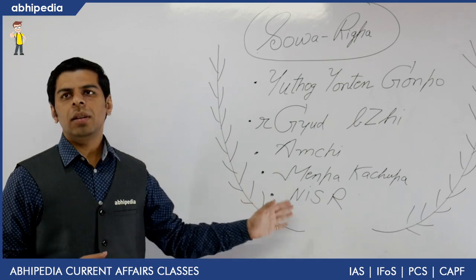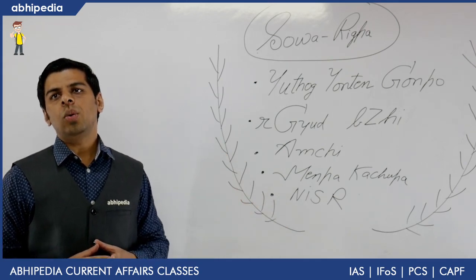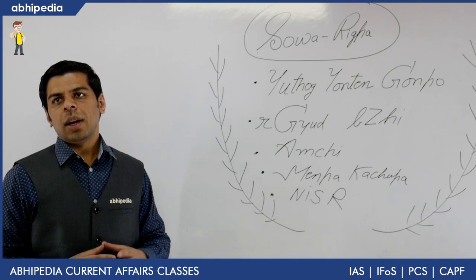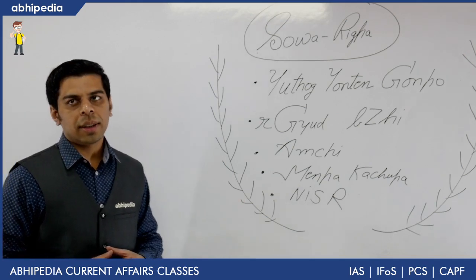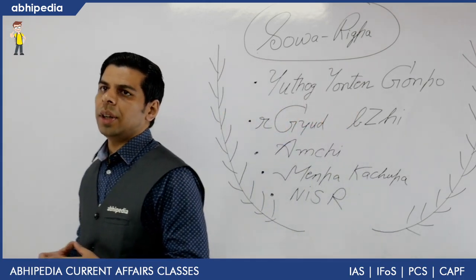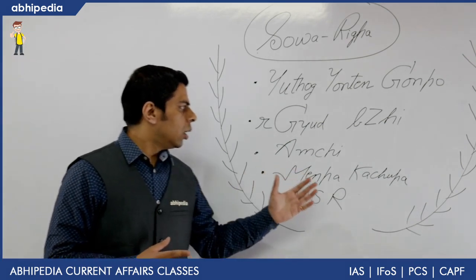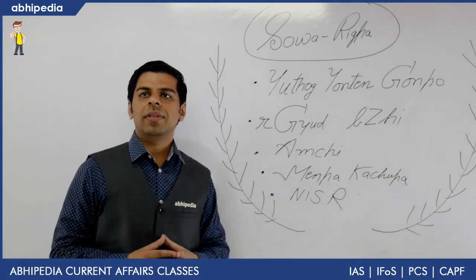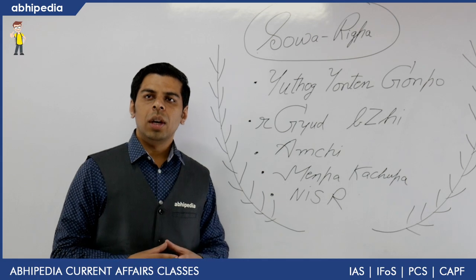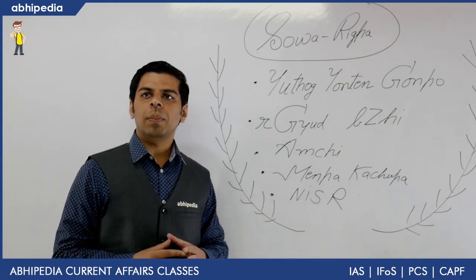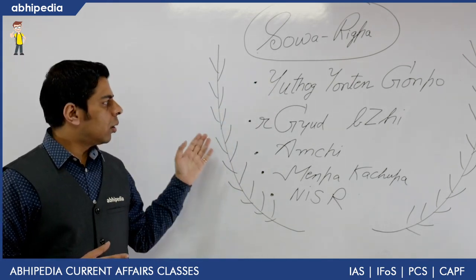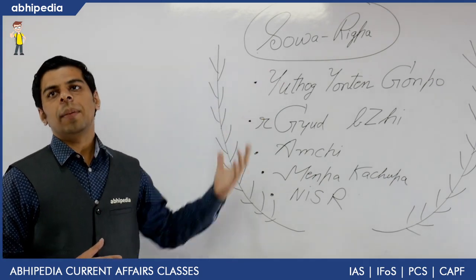Sova Rigpa had largely been neglected over the years. It was only in 2009 that India became the fourth country to formally recognize the Sova Rigpa system, after China, Bhutan, and Mongolia. Over the years, both present and previous governments have tried to mainstream the AYUSH system. Sova Rigpa has been integrated into AYUSH, and as of last year, the AYUSH acronym now also includes Sova Rigpa, showing the government's efforts to formalize this system.